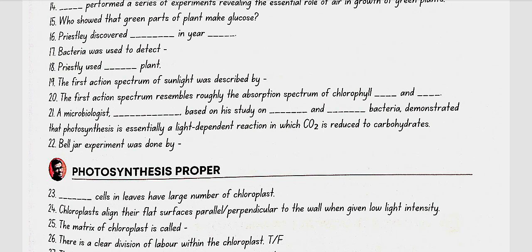The first action spectrum of sunlight was described by T.W. Engelmann. The first action spectrum roughly resembles the absorption spectrum of chlorophyll A and B. Cornelius Van Neel, a microbiologist, based on his study on purple and green bacteria, demonstrated that photosynthesis is essentially a light-dependent reaction in which CO2 is reduced to carbohydrates.